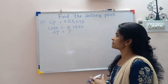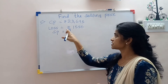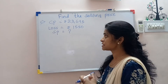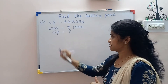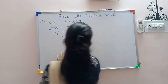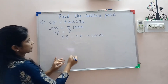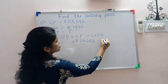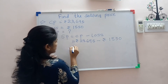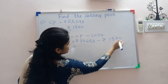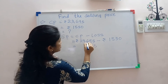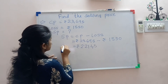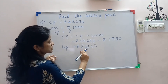Next example: cost price is given rupees 23,695 and loss is given rupees 1550. Find the selling price. Since cost price and loss are given, we subtract loss from cost price: selling price equals cost price minus loss. Rupees 23,695 minus rupees 1550. Subtraction: 5 minus 0 is 5, 9 minus 5 is 4, 6 minus 5 is 1, 3 minus 1 is 2, 2 minus 0 is 2. Selling price is equal to rupees 22,145.